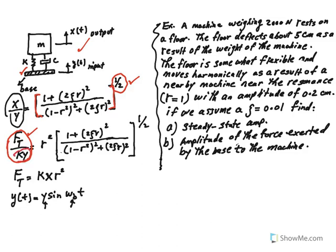Ky also has the dimension of force. F_t is called the amplitude of the force exerted by the base to the mass, and it equals r squared times that bracket. It can be shown that putting ky over there gives ky r squared, and y times the bracket actually becomes x, so you can write it in that form.